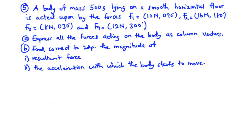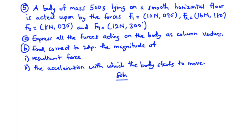For question number five, a body of mass 500 grams lying on a smooth horizontal floor is acted upon by the forces F1 10 newtons at 90 degrees, F2 60 newtons at 180 degrees, F3 8 newtons at 30 degrees, and F4 12 newtons at 300 degrees. We are going to express all the forces as column vectors, and then find the magnitude of the resultant force and the acceleration of the body.